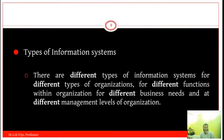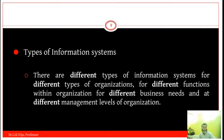There are different types of information systems for different types of organizations, for different functions within the organization, for different business needs and at different management levels. Information systems are basically grouped into five types: transaction processing system, management information system, decision support system, executive information systems, and expert systems.